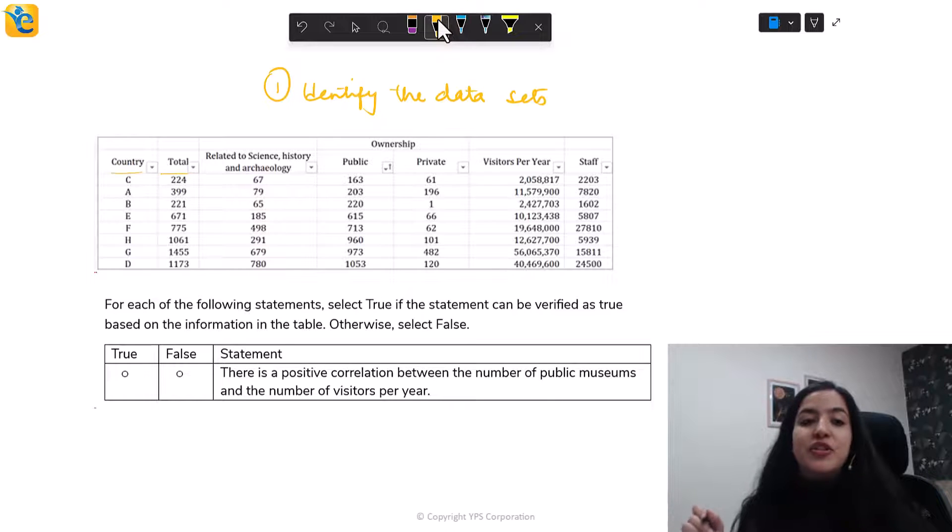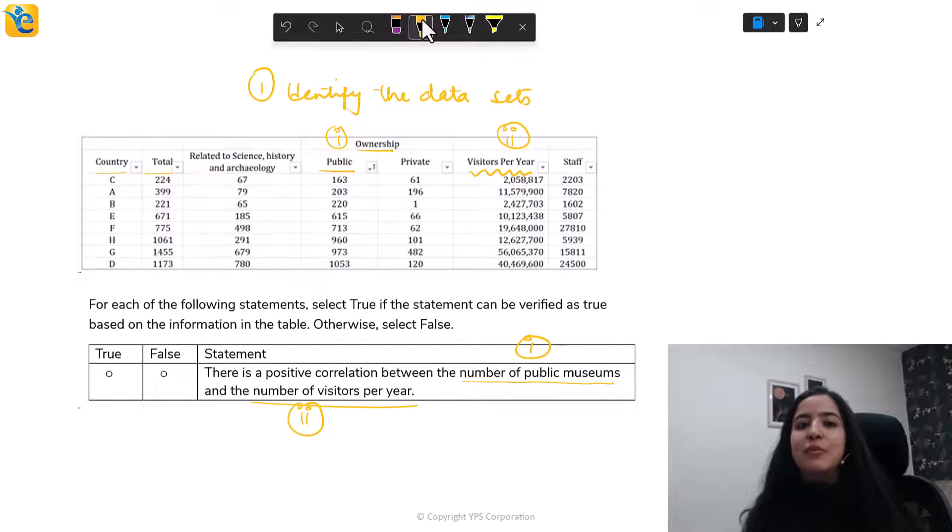First task again is to identify the two data sets. Let's try and do that here. We need to evaluate correlation between number of public museums and number of visitors per year. Let's look at the table here and try to find which columns we are interested in. You will not always see the terms that are used in the statement exactly reflected in the table headers. For example, number of public museums - in the table, this is actually titled under ownership and it's public. Not the same exact title. Similarly, number of visitors per year is labelled as visitors per year in the table. They obviously mean the same here. All you needed to do was a minor mental translation to align what was there in the statement and what is there in the table. That's one important thing. This is the first step you have to be absolutely sure of.